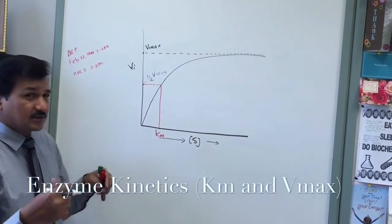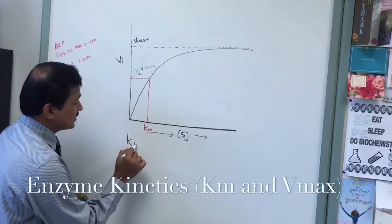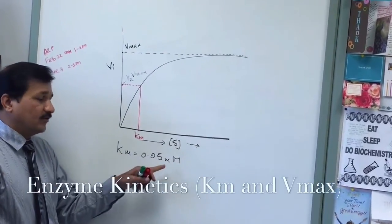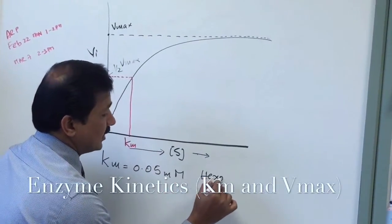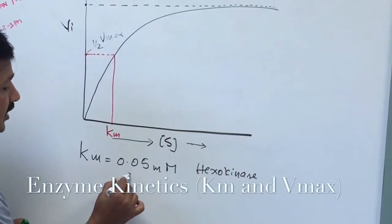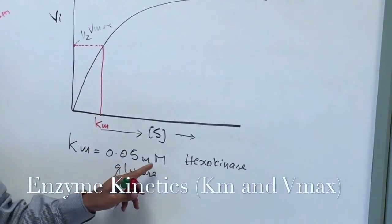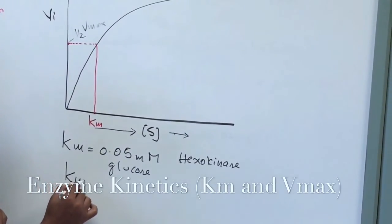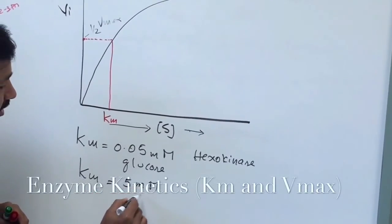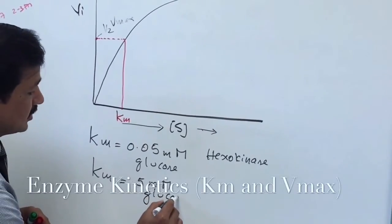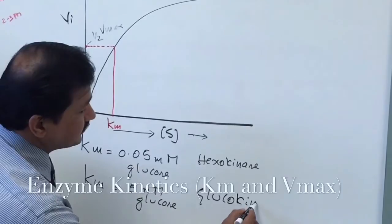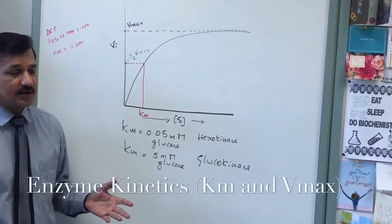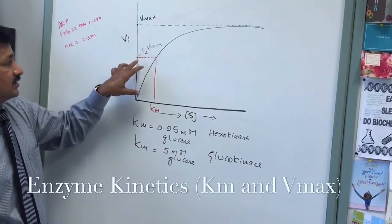KM is different for each enzyme. For example, hexokinase has a KM of 0.05 millimolar for glucose — it means at 0.05 millimolar of glucose, hexokinase reaches half its maximum velocity. Glucokinase, on the other hand, has a KM of 5 millimolar, which is 100 times higher than hexokinase. So at 5 millimolar of glucose, glucokinase reaches half its maximum velocity.